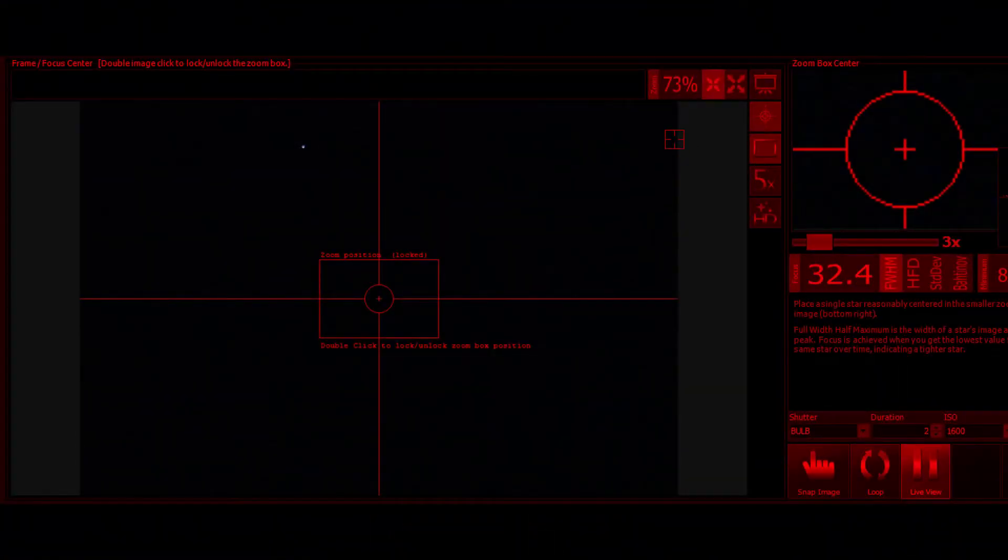Okay, you can see StarSense did a pretty good job. Deneb is already in my field of view. So I'm just going to adjust the directional keys on the hand controller until I get it about centered here. I'm using Backyard EOS, which is a really great program for doing this.